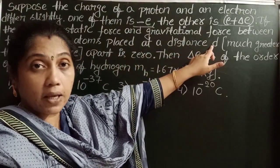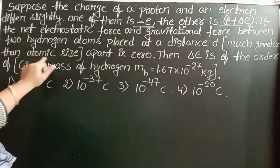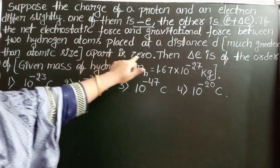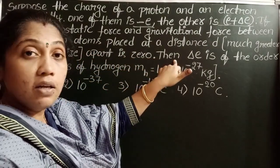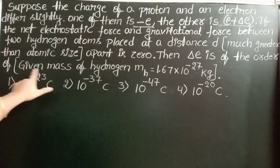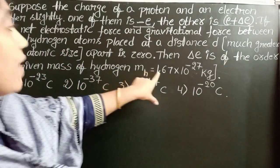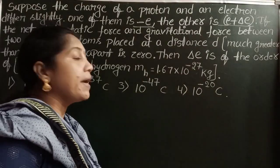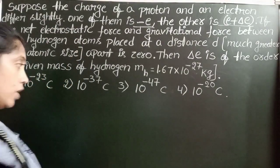...placed at a distance d much greater than atomic size apart is zero. Then delta E is of the order of given mass of hydrogen is 1.67 into 10 power minus 27 kg.